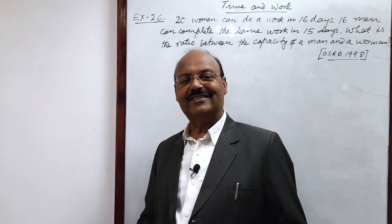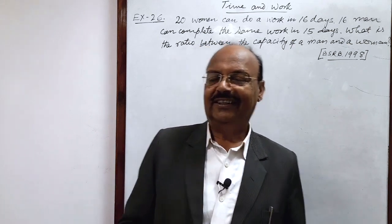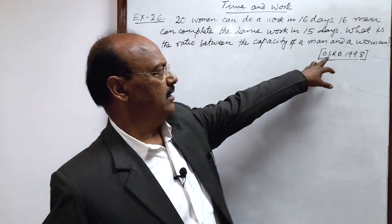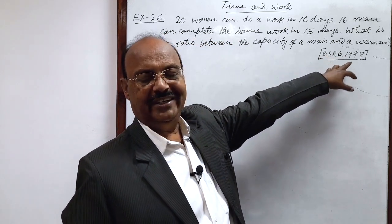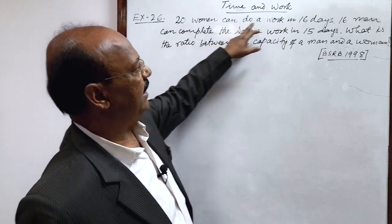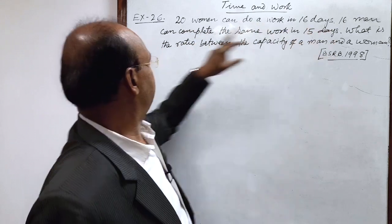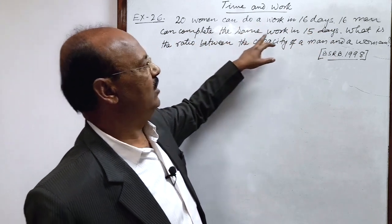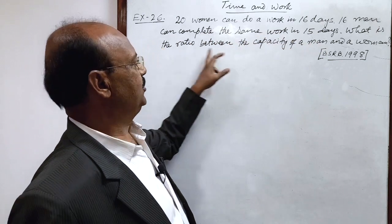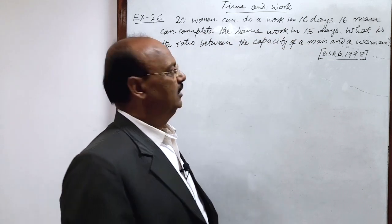Welcome students. Let us see a very interesting question from the topic time and work. The question has been asked in Banking Service Recruitment Board Examination in 1998. The question is: 20 women can do a work in 16 days, 16 men can complete the same work in 15 days. What is the ratio between the capacity of a man and a woman?